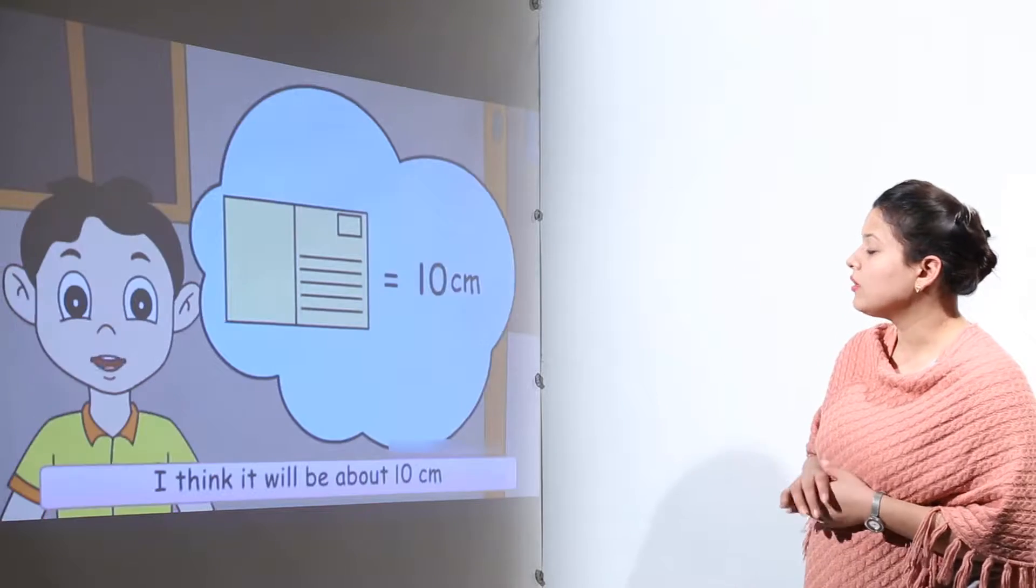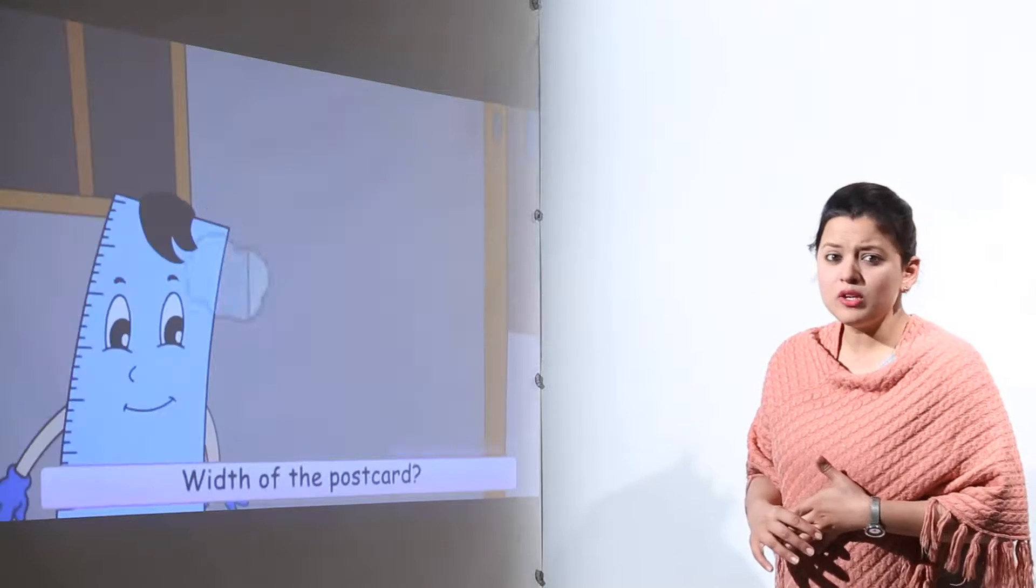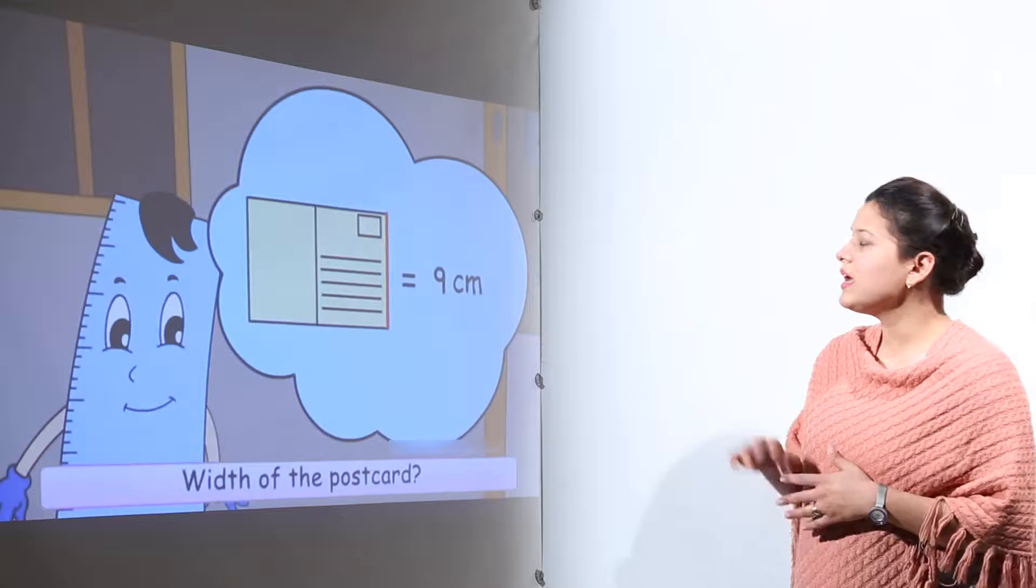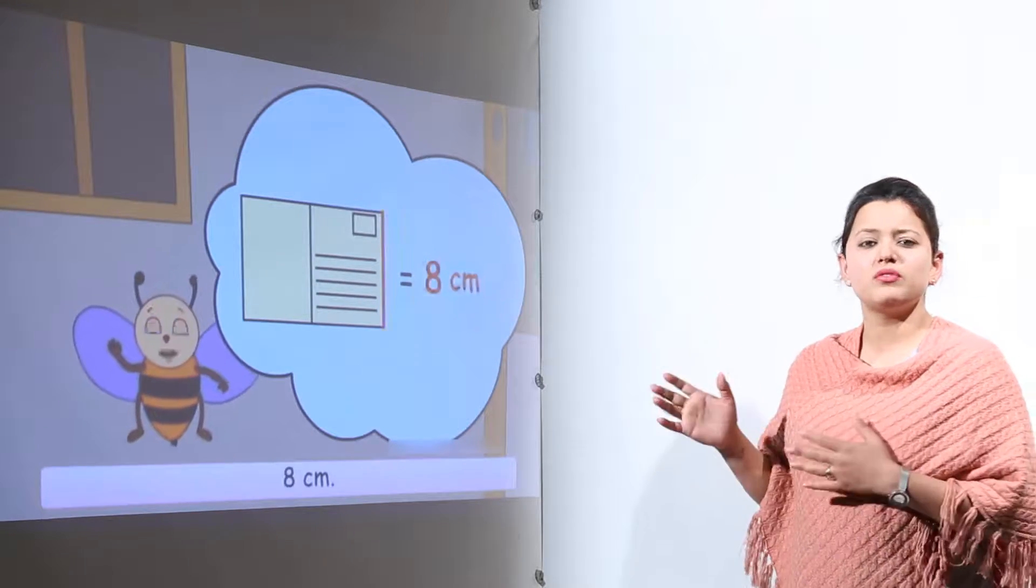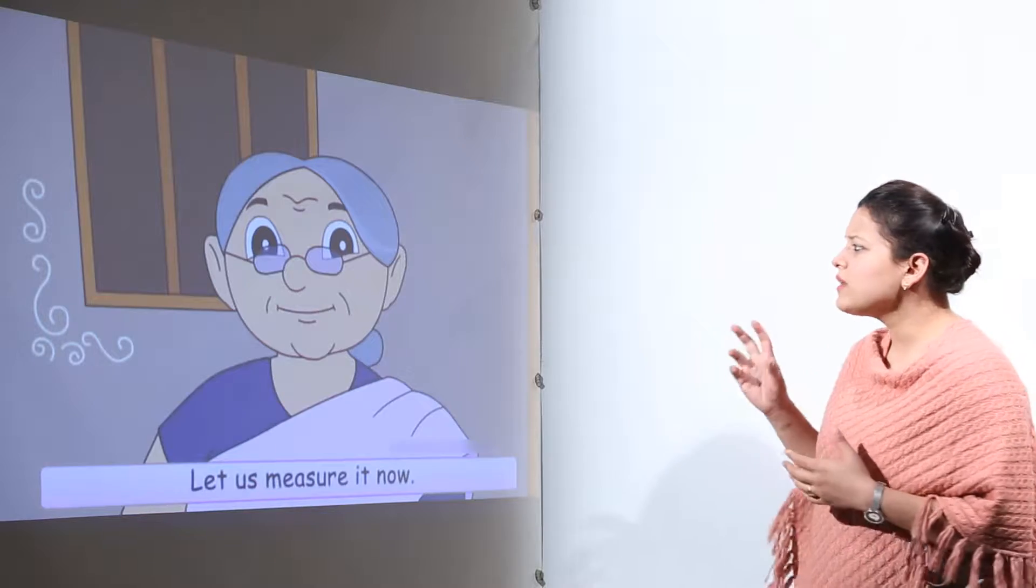So here is an object of an envelope. The envelope's breadth or the width can be estimated. Now all three of them estimated them to be very different values. Now whose value is correct?